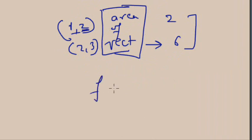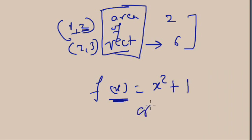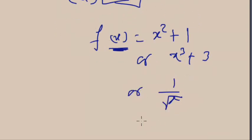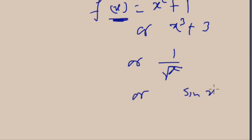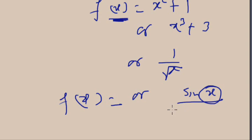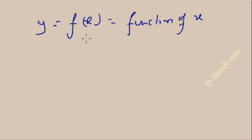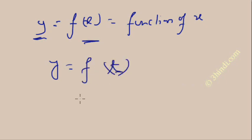In the single-variable format, the output depends only on a single variable. f(x) is the function of X, dependent on values of X. It can be x² + 1, x³ + 3, 1/√x, or sin(x) — anything. f(x) is also denoted by Y, so Y is a function of X. For the GATE exam you need to read only functions of single variables.